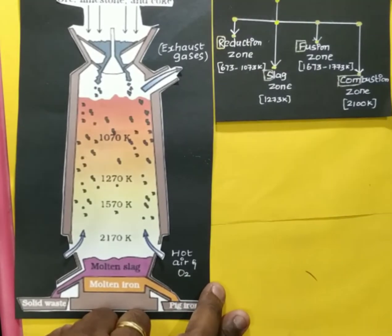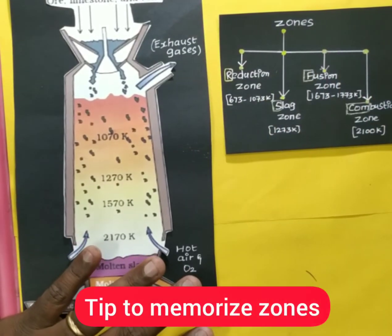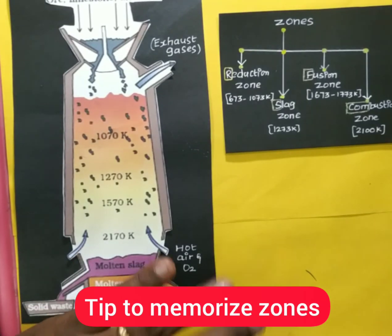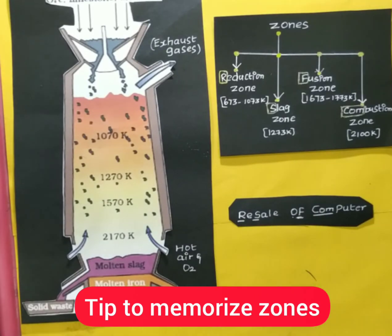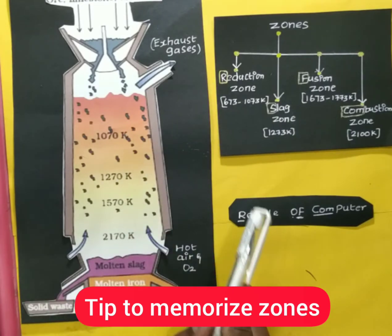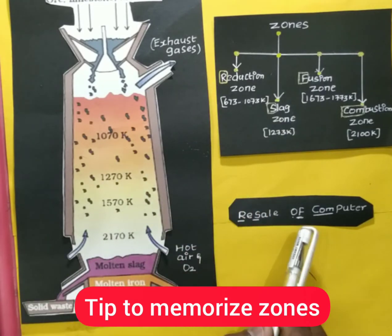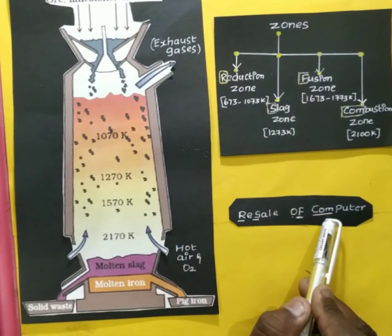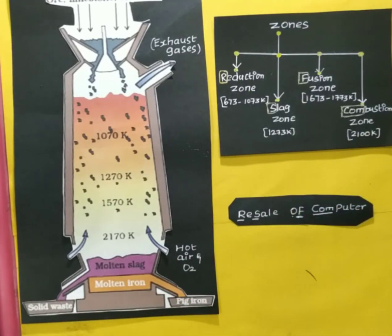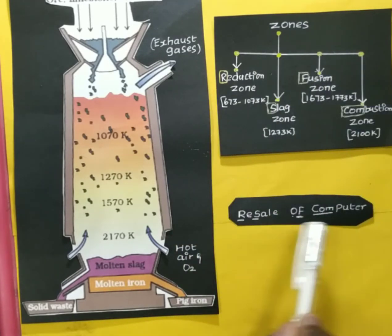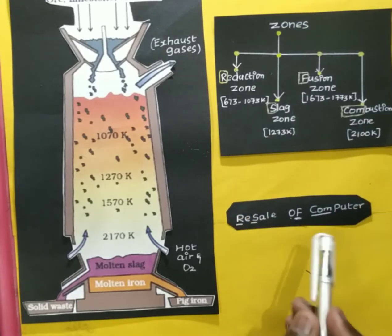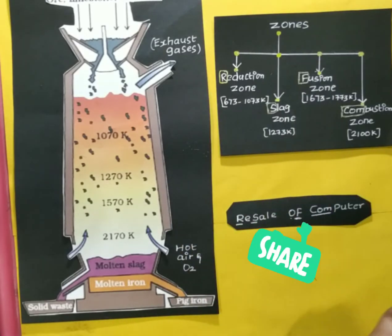For a memory trick, you can memorize the zones as 'RESALCOM' — RE for reduction zone, SAL for slag zone, OF for fusion zone, and COM for combustion zone. Using this short trick, you can identify and keep all the zones in memory.